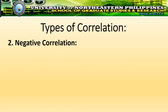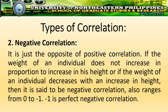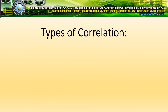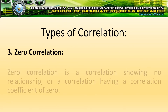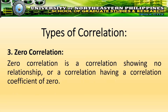Second, negative correlation. It is just the opposite of positive correlation. If the weight of an individual does not increase in proportion to increase in his height, or if the weight decreases with an increase in height, then it is said to be negative correlation. It also ranges from zero to negative one, where negative one is perfect negative correlation. Zero correlation is a correlation showing no relationship, or a correlation having a correlation coefficient of zero.